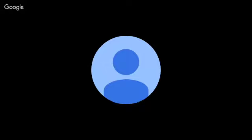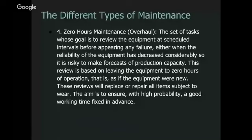Zero hours maintenance is a set of tasks whose goal is to review equipment on a scheduled interval. Basically, at a thousand hours — whether the equipment is functioning or not — you treat it as though it needs to be replaced, whether that's a pump, a motor, or a light bulb. Even if it's still functioning at that thousandth hour, you're still going to change it out in anticipation of it going bad at any moment.